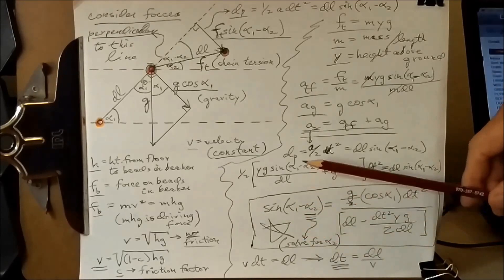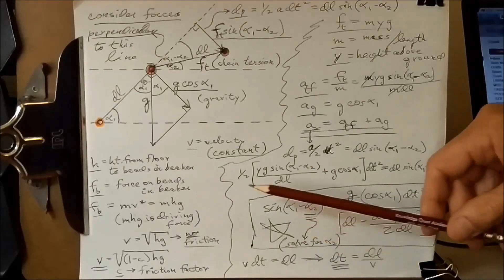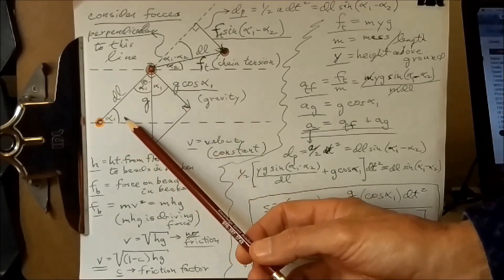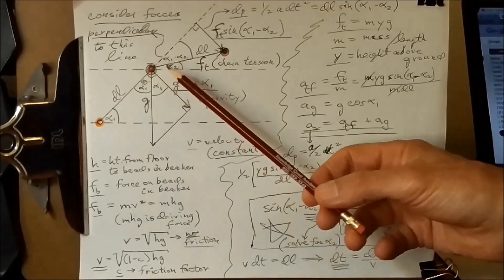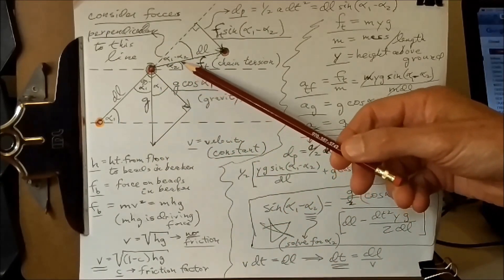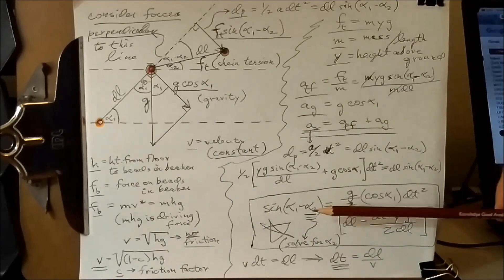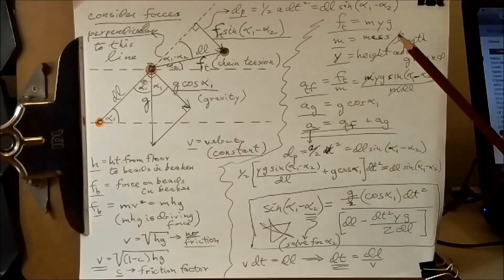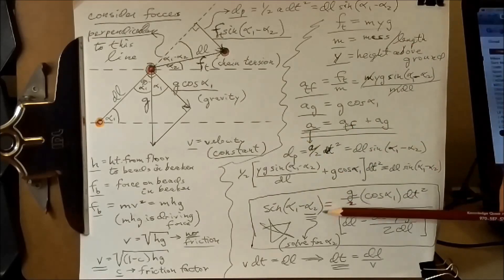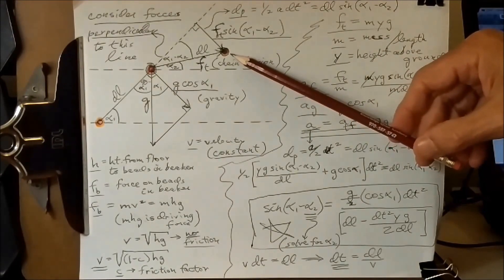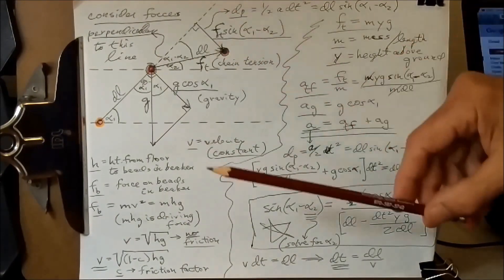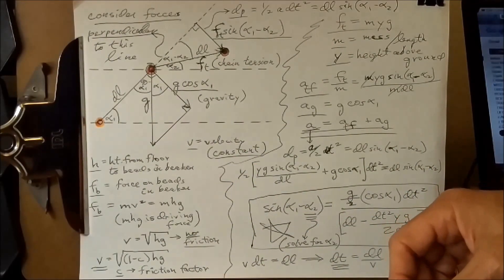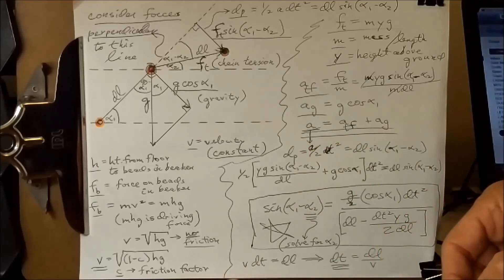This equation relates alpha 1, which is the angle of the first section, to the new angle alpha 2, which is right here. This equation must be solved for alpha 2 given alpha 1. Once we solve for alpha 2, the bead moves on up, and alpha 2 now becomes alpha 1, and the process is repeated. This is the very basic procedure in a numerical method of this nature.